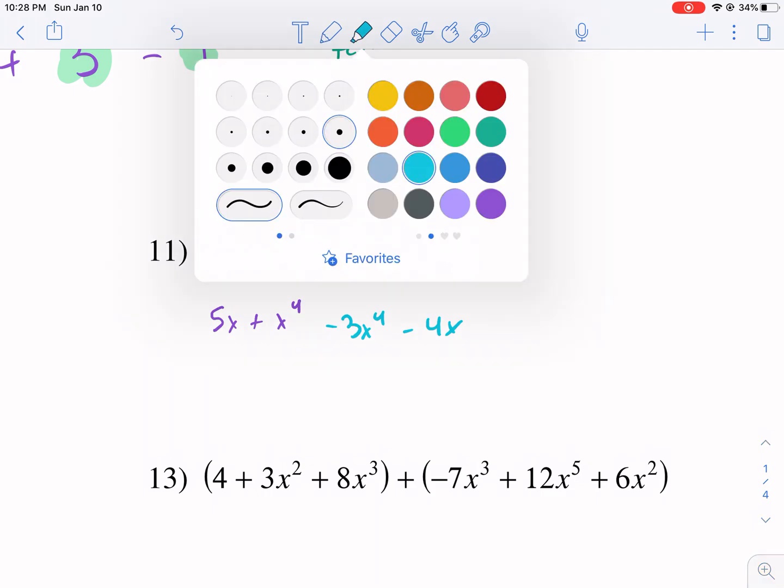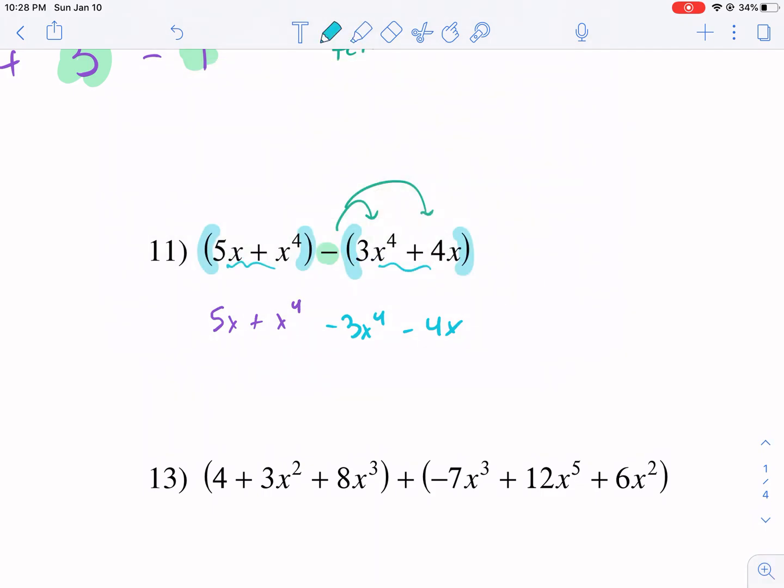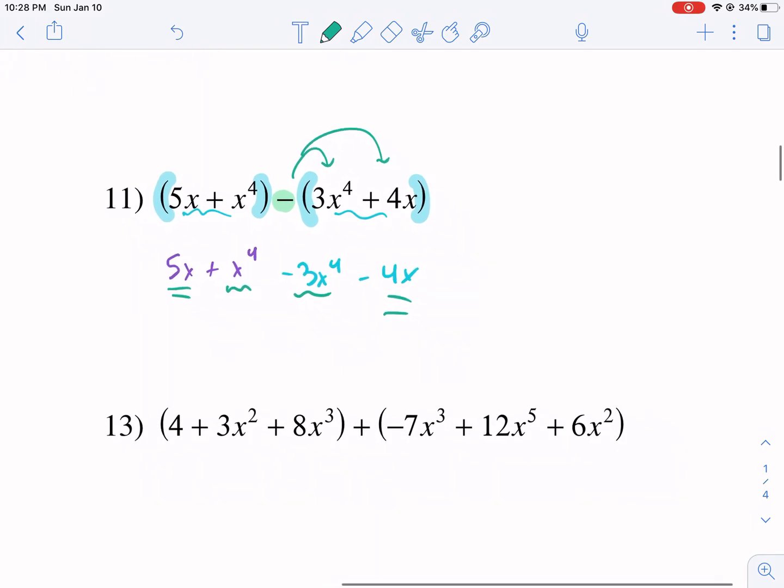This one's fine, because there's nothing there. It's an implied plus sign, which doesn't change it. So we can just go 5x plus x to the fourth here. But this minus sign, anytime it's a minus sign or a number, this needs to be distributed to every term inside. So this becomes minus 3x to the fourth minus 4x. And now we can get rid of the parentheses.